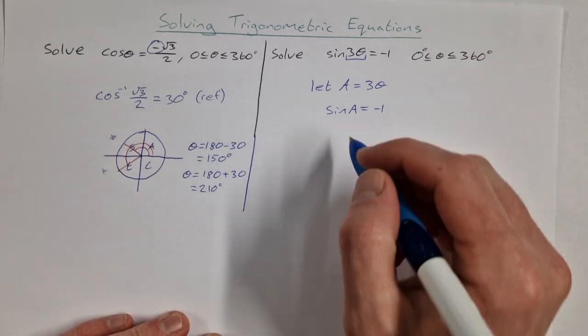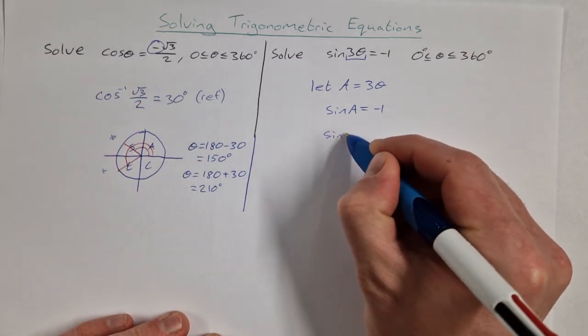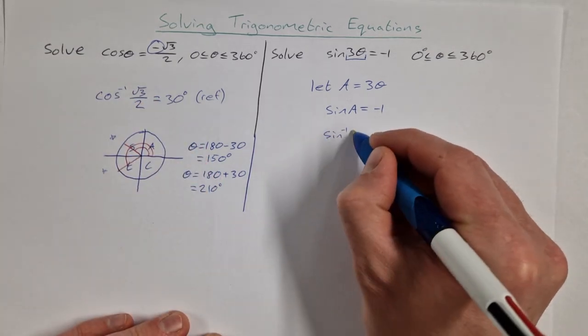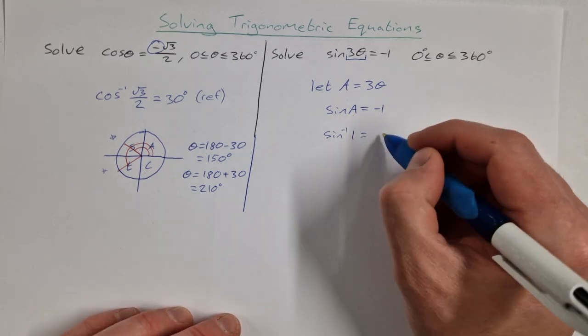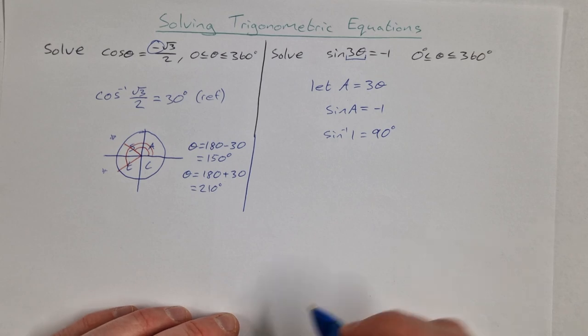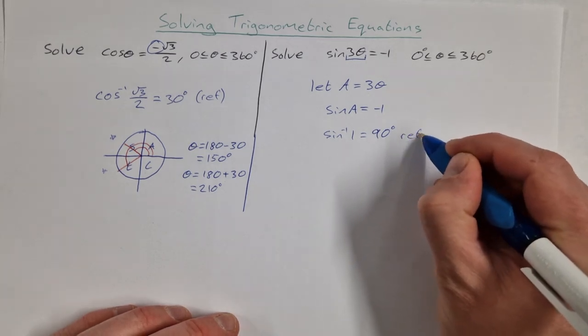Now what we do then, we assume it's similar to this now, so sine inverse of the positive 1 is equal to A. Sine inverse of 1 is 90 degrees. So that's our reference angle for this one, 90 degrees.